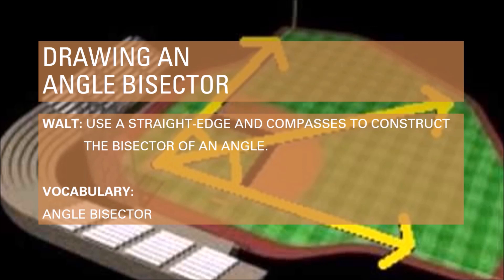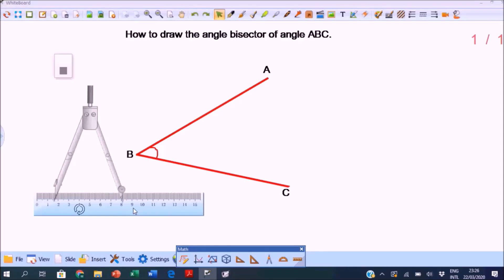The word bisect means to cut in half, so the angle bisector is a line that cuts a given angle into two equal parts.